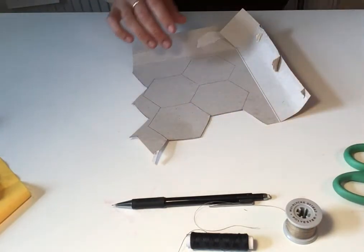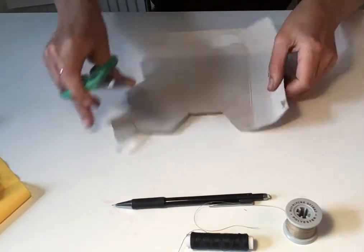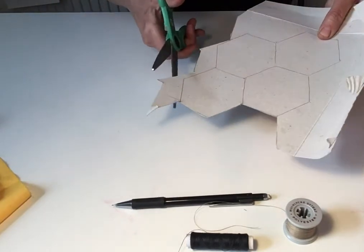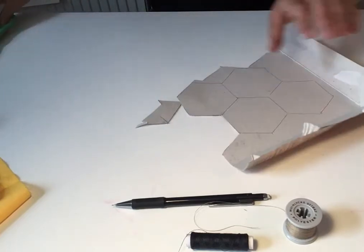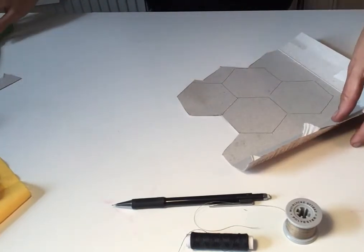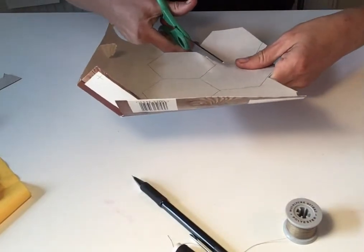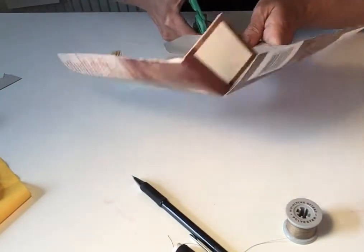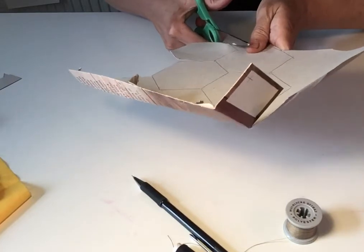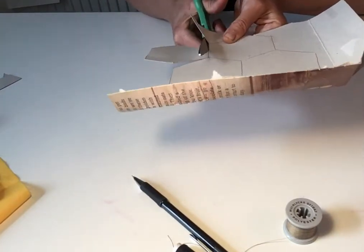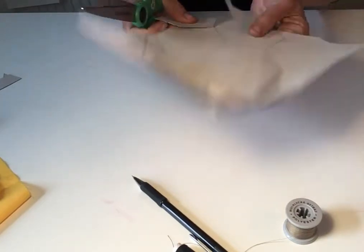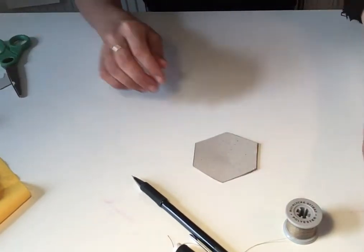So first we're going to start by cutting the templates out of the cardboard. This is quite simple but it's a bit fiddly. There's lots of small stitches needed but you could make the templates larger if you found a larger cardboard template. I've just downloaded one off the internet because I didn't want to measure the hexagon.